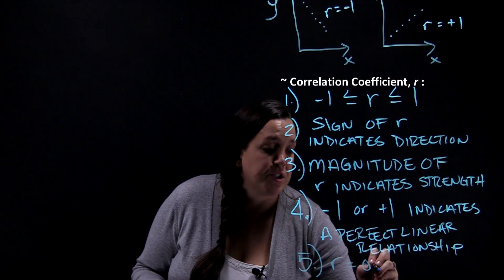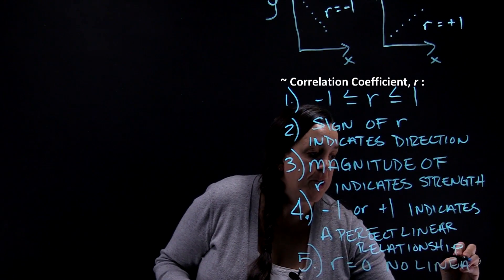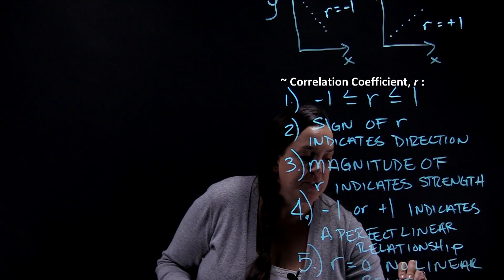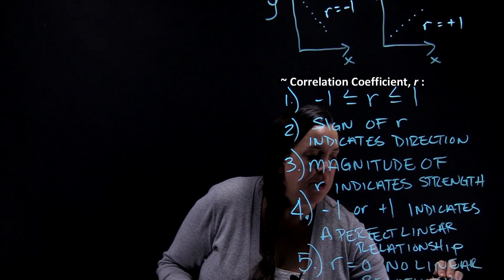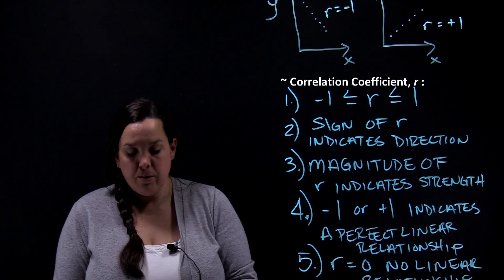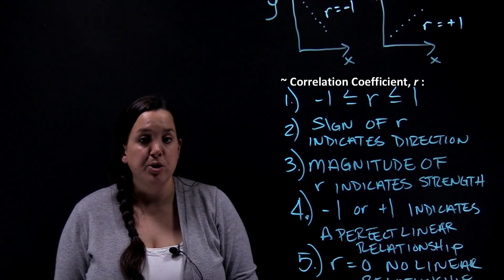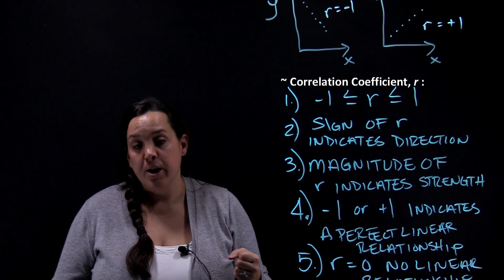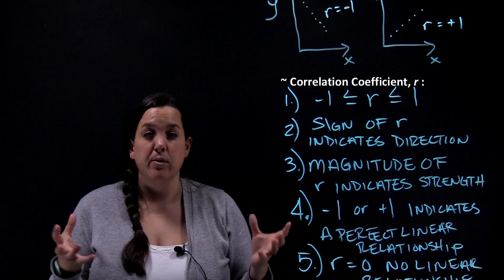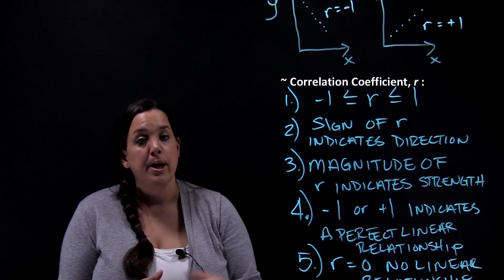An r equal to zero would indicate no linear relationship — as x increases, y is not changing. When looking at a scatterplot, the tighter or looser pattern coincides with your correlation coefficient. The tighter the pattern, the closer the correlation coefficient is to one. The looser the pattern, the closer the correlation coefficient is to zero.